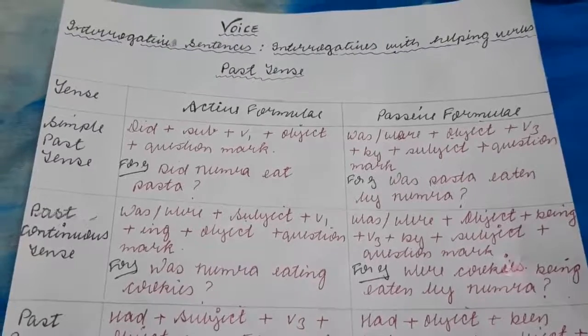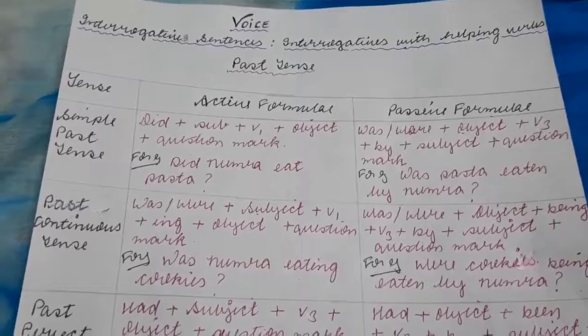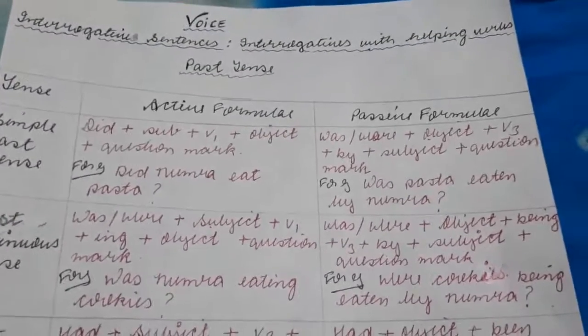Starting with the simple past tense, its did active formula: did plus subject plus verb 1 plus object plus question mark punctuation. Did changes to was verb, was for singular and plural.